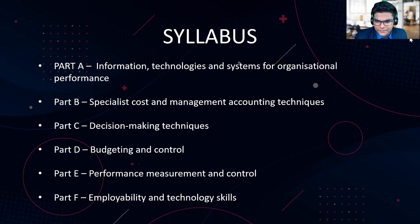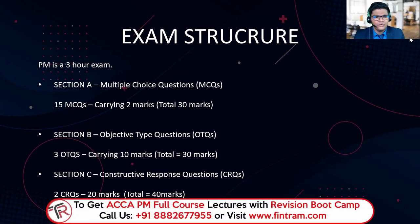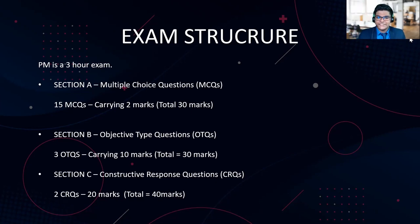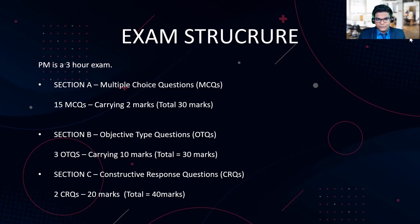Now let's move on to the exam structure. So what exactly is the exam structured for performance management? We know that PM, like most skill subjects, is a three-hour exam. When it comes to the PM paper, there are three sections. Section A contains multiple choice questions — specifically 15 multiple choice questions, each carrying two marks. So we will get a total of 30 marks from Section A.